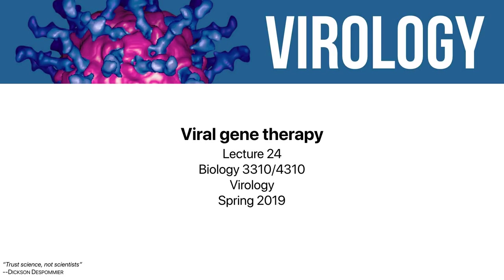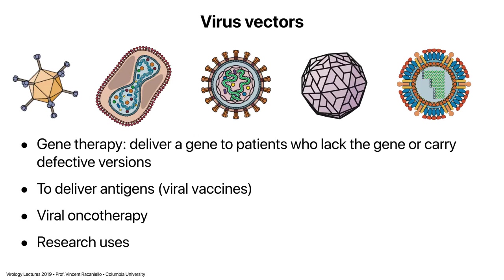So if you remember me for one thing, remember that: trust science, not scientists. Today I want to talk about viral gene therapy — how to use viruses to do good. I have a broader view of viral gene therapy than most: it includes using virus vectors to deliver a gene to patients who lack it or have a mutant copy, to deliver antigens to make a vaccine, and to treat cancers through viral oncotherapy. Vectors are also used extensively for research.